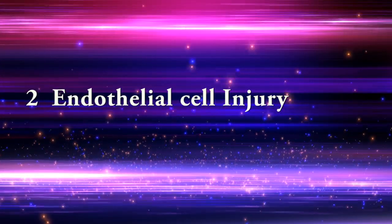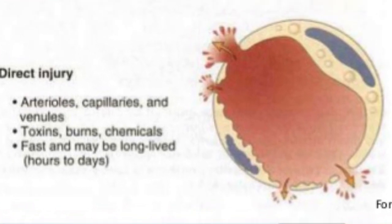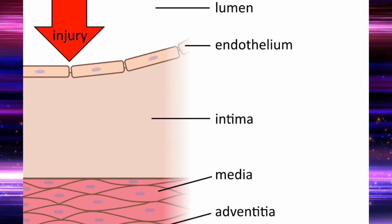Second: endothelial injury results in vascular leakage by causing endothelial cell necrosis and detachment. Endothelial cells are damaged after severe injuries such as burns and some infections.